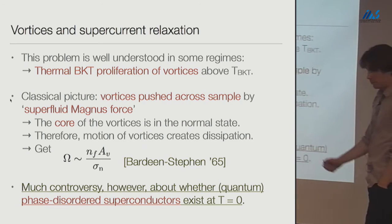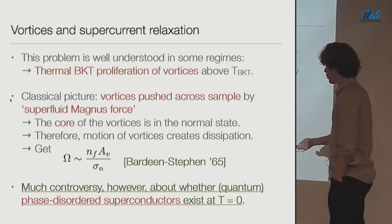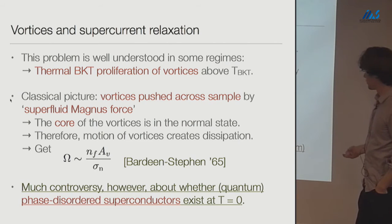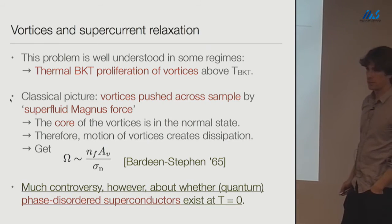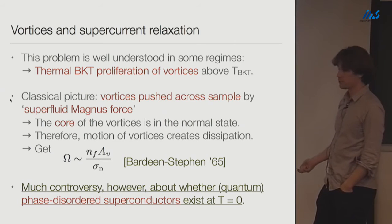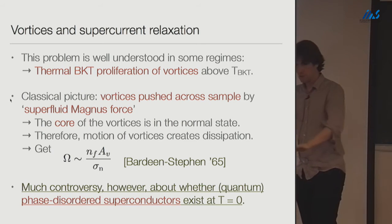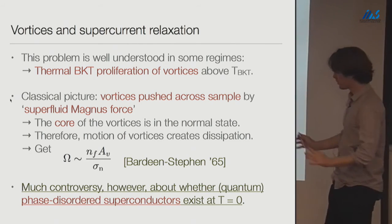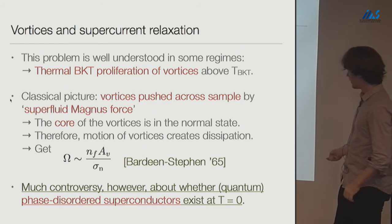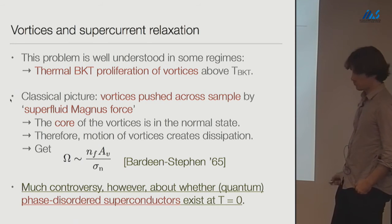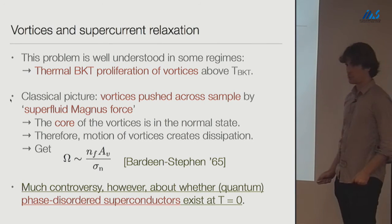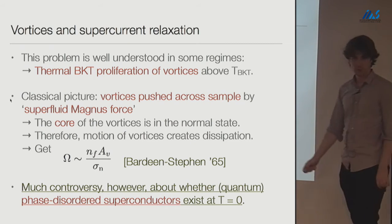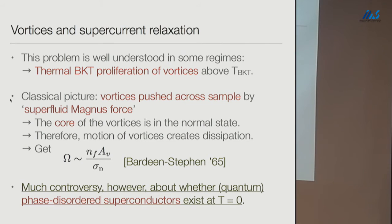What is controversial — driven by experiments — is whether this physics can survive at zero temperature. Could there be a phase-disordered superconductor: something that wants to be superfluid but whose superfluidity is relaxed and phase is disordered by proliferation of vortices at zero temperature? BKT physics won't do that. But if such a phase of matter exists, it would be called a quantum phase-disordered superconductor.